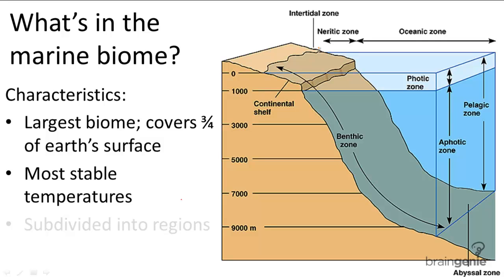Without contact to sunlight, deeper regions only receive indirect heating from the heated water molecules at the surface. So temperatures are even more stable as you go deeper, and the very bottommost regions of the ocean barely receive any temperature changes.